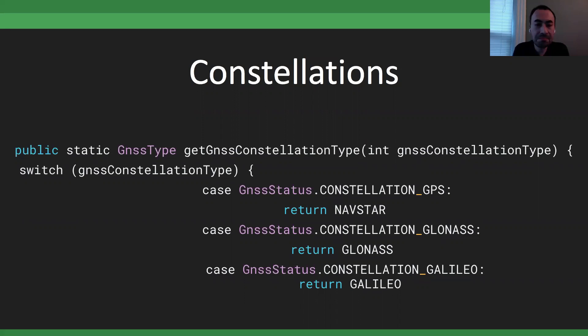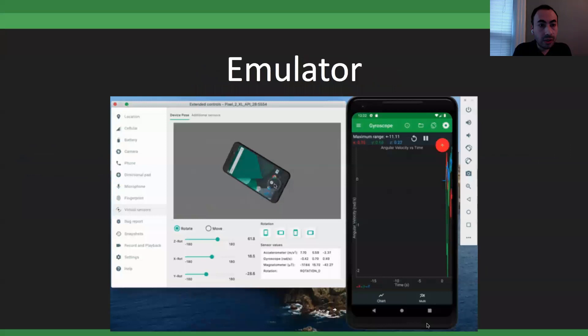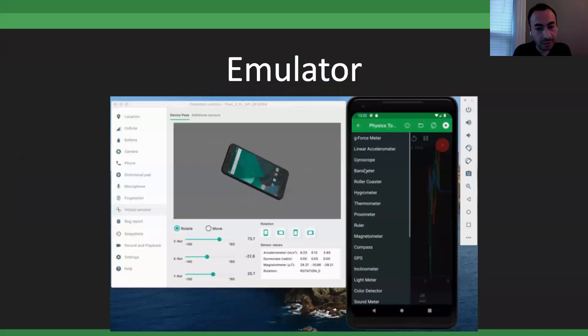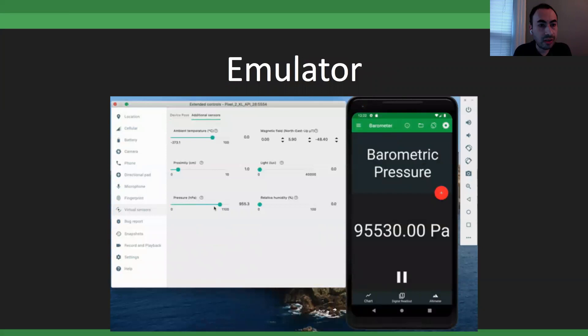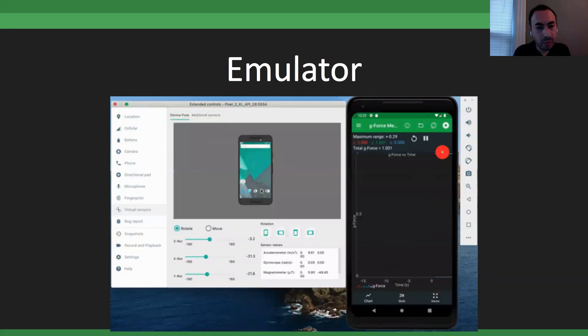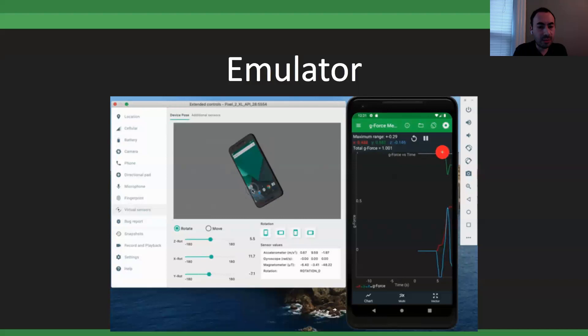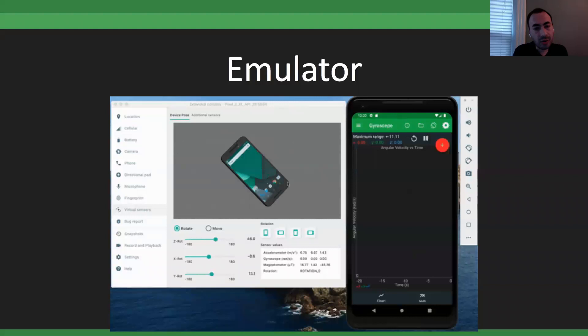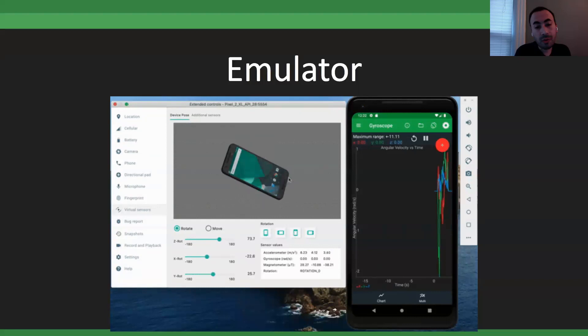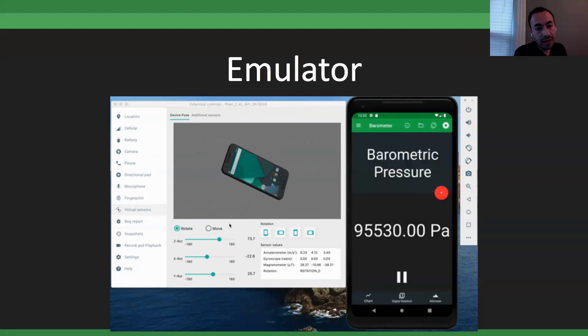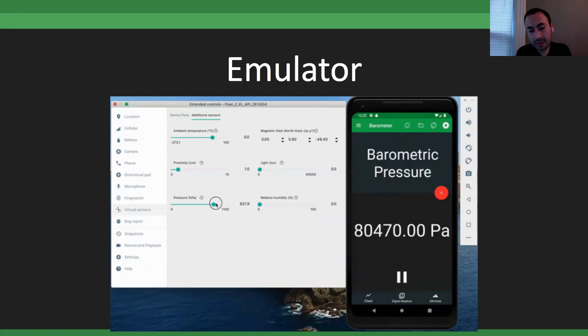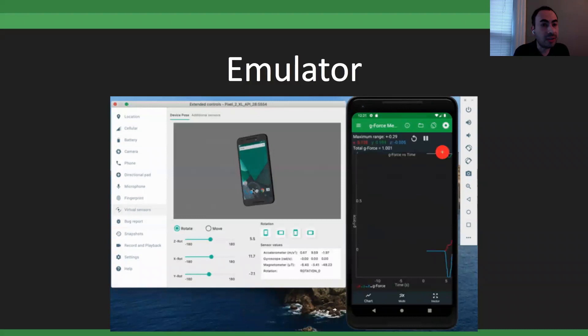The best way to test all of this is with a physical device since your own phone has all its sensors. But you can also use the Android Studio emulator — since around version 3.0, you can fake sensor data. In the emulator you can flip the device and see the accelerometer and gyroscope react, and you can also feed data for less common sensors like the barometer through the emulator tools panel by changing the pressure parameter.